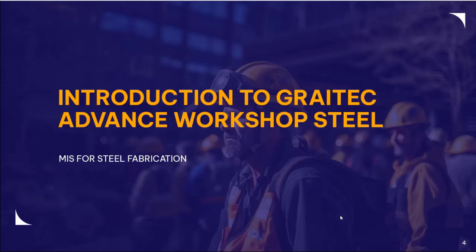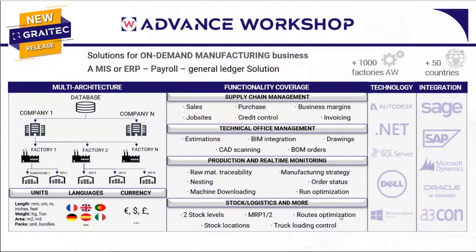Let's take a quick look at Great Tech Advanced Workshop Steel. In short, Advanced Workshop is an MIS — a management information system. It is a multi-architecture solution, which means you can have multiple company profiles, multiple factories and warehouses linking to a single database. We can manage multiple units, languages and currencies within the platform, and it's really meant to manage all actions within a steel fabrication business.